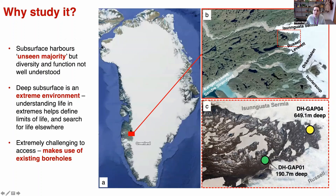Here you can see the locations — this is west of Greenland, the Fennoscandian Shield, a really ancient rock formation. Here is the study area where the boreholes are located. I'm using coloured circles: there's a green one and a yellow one — two independent drill holes. One is 190 metres deep, that's GAP-01 or drill hole one, and the other is somewhat deeper with two samples from that site. So I've got access to data from both of these.